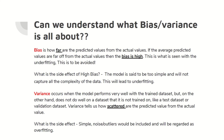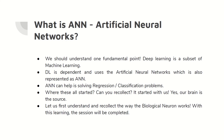Variance is the next term we need to understand. It occurs when the model performs very well with the training dataset but doesn't do well on data it has not been trained on. If I give you some dataset and you train on it, your system will perform very nicely only with that dataset — even with similar data the system has not had any exposure to, it won't perform well. Variance tells us how scattered the predicted values are from the actual values. The side effect: noise and outliers will also be included, and this will be called overfitting. Bias and variance are two very important terms that you must understand.